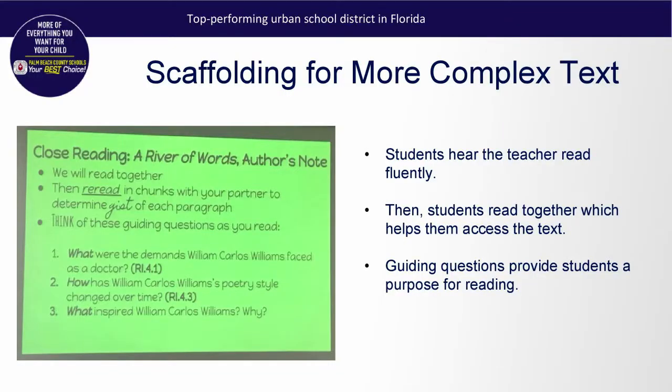Now you will see an example of scaffolding to complex text from one of our literacy classrooms. In this example, students are working with a piece of complex text — a William Carlos Williams poem. The teacher first reads the poem aloud to students so they can hear a model of fluency and the cadence of the work. This is one scaffold for students. The next scaffold is for students to re-read it with a partner in chunks. While doing so, the teacher provides students with a purpose for reading — scaffold three — with the questions you see on the slide. She doesn't have them write the answers yet; these are merely questions for them to consider as they read. These scaffolds help all students access the complex text so they can engage in the standards-based tasks.